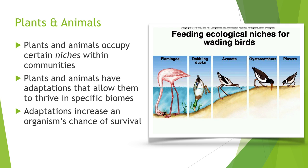Plants and animals have certain adaptations that allow them to live in these biomes. An adaptation is anything that increases an organism's chance of survival. For example, there are several different wading birds within a specific biome near the beach or a body of water, and each one occupies a certain niche based on its food source. The flamingo has adaptations to wade deeper in the water, whereas the oyster catcher has longer legs than the plovers, allowing it to occupy a different range and food source.